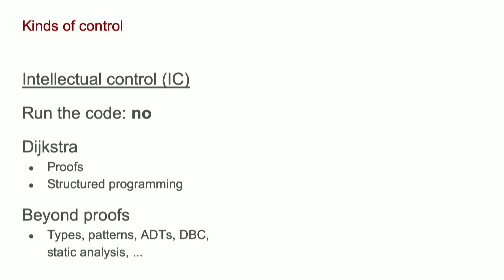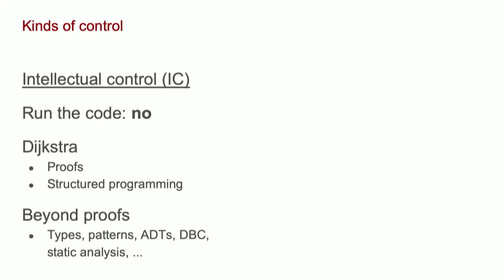Really beyond the proofs, there's all kinds of things that we do today, or don't do today, that can give us more or less confidence. I would include things like having a really strong type system instead of being stringly typed, and structuring your code so it has consistency, using abstract data types designed by contract and so forth.